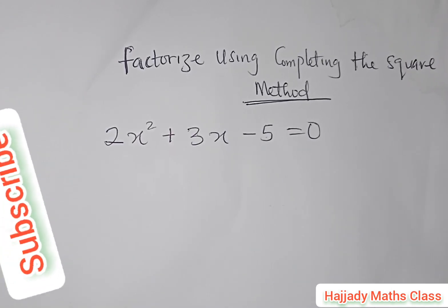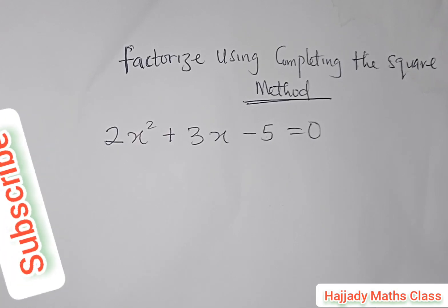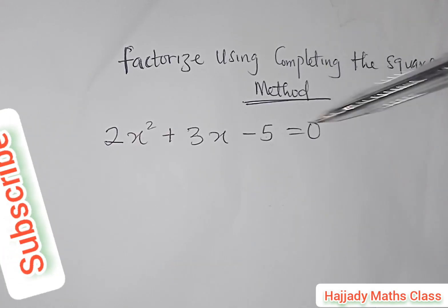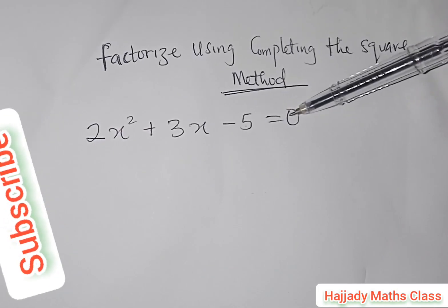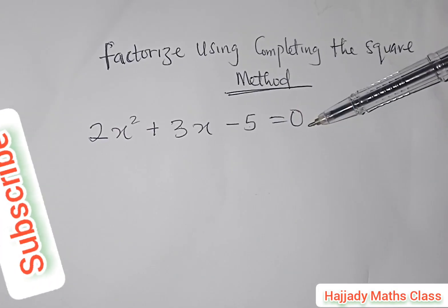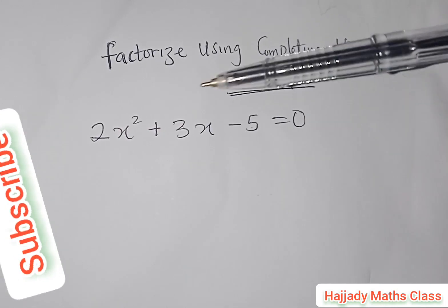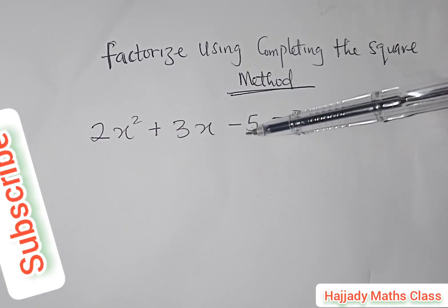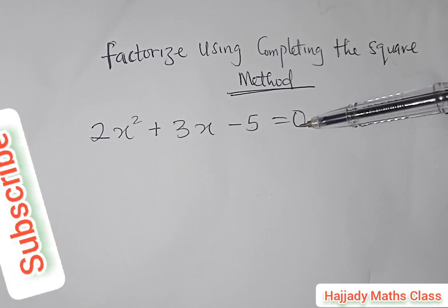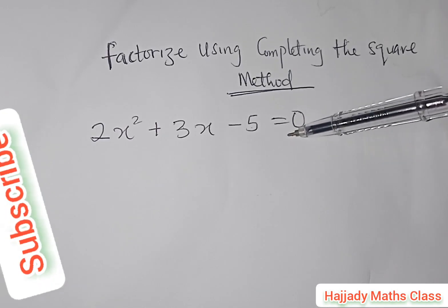Hello viewers, welcome to Ajadi Math Class. If this is the first time watching our videos, please kindly subscribe. To our returning viewers, we say a very big thank you. Today we'll be factorizing the quadratic expression 2x² + 3x - 5 = 0 using the completing the square method.